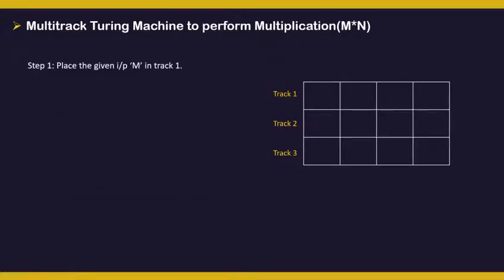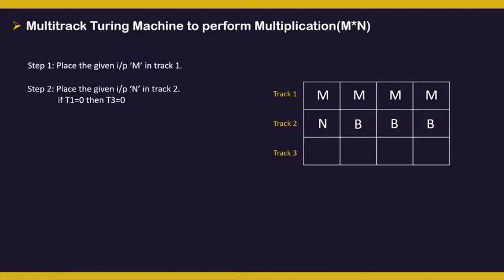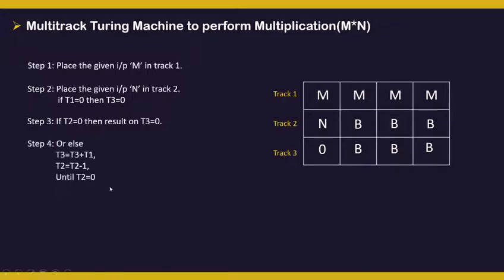Step 1 is to place m in track 1. Step 2 is to place n in track 2 followed by blanks. If we have 0 in track 1 or track 2, we place 0 in track 3 as well. Otherwise, we update the value in track 3 as t3 = t3 + t1, and we update track 2 as t2 = t2 - 1, decrementing it by 1. We perform this until we get 0 in track 2. When we get 0 in track 2 we stop, and at that time we will also have the result in track 3.